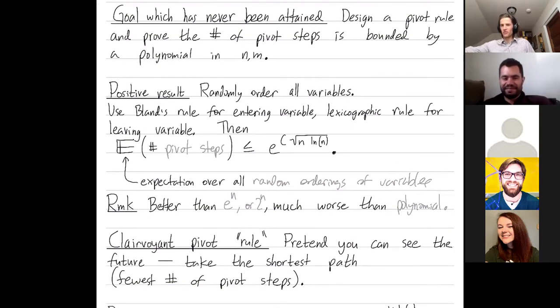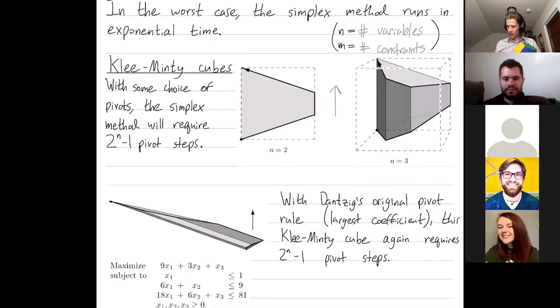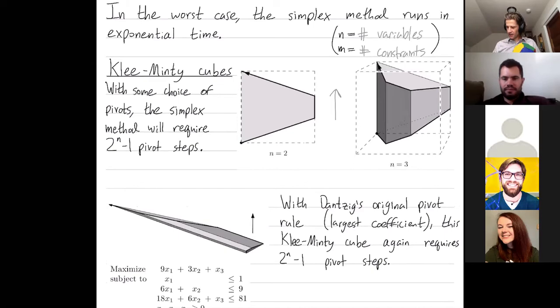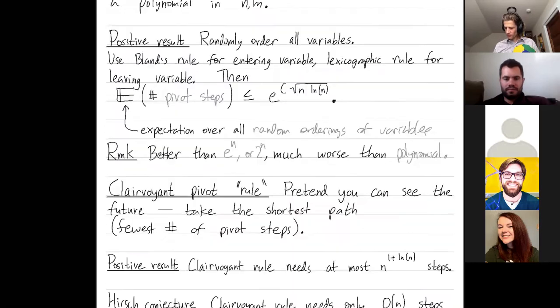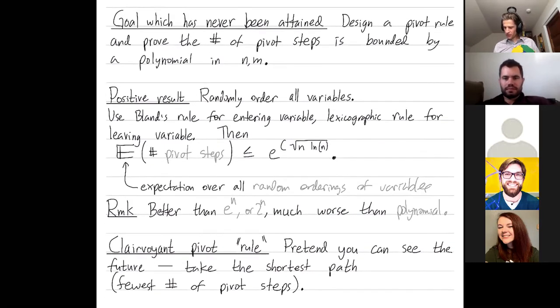So the clairvoyant rule, pretend we can see the entire map of the feasible region, and you can choose how you want to pivot based on the entire polytope. So you're always going to pivot in a way that allows you to take the shortest number of steps. So the clairvoyant rule would allow you just to say, aha, obviously I just want to take one step to go from here to the optimal. So why is it even worth talking about the clairvoyant rule? Well, if you can't necessarily do that well with the clairvoyant rule, then certainly you can't do very well with any other rule, because the clairvoyant rule is strictly the best rule, it's just unimplementable.